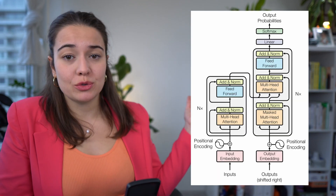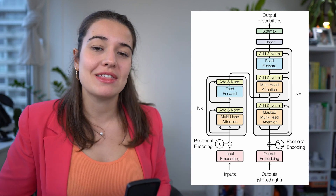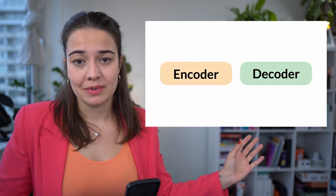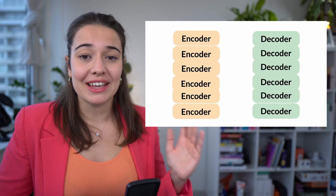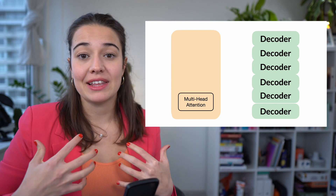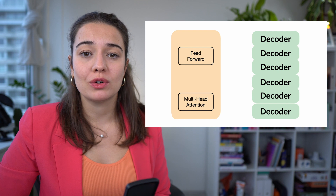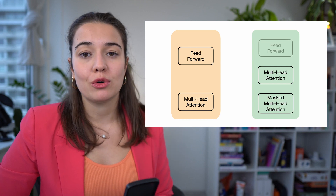Now let's look at how transformer networks learn and what their architecture looks like. On a high level, transformers have an encoder and a decoder part — specifically six encoders and six decoders. Each encoder has one self-attention layer that pays attention to the sentence itself, and one feed-forward neural network layer. Every decoder has two self-attention layers and one feed-forward neural network layer.